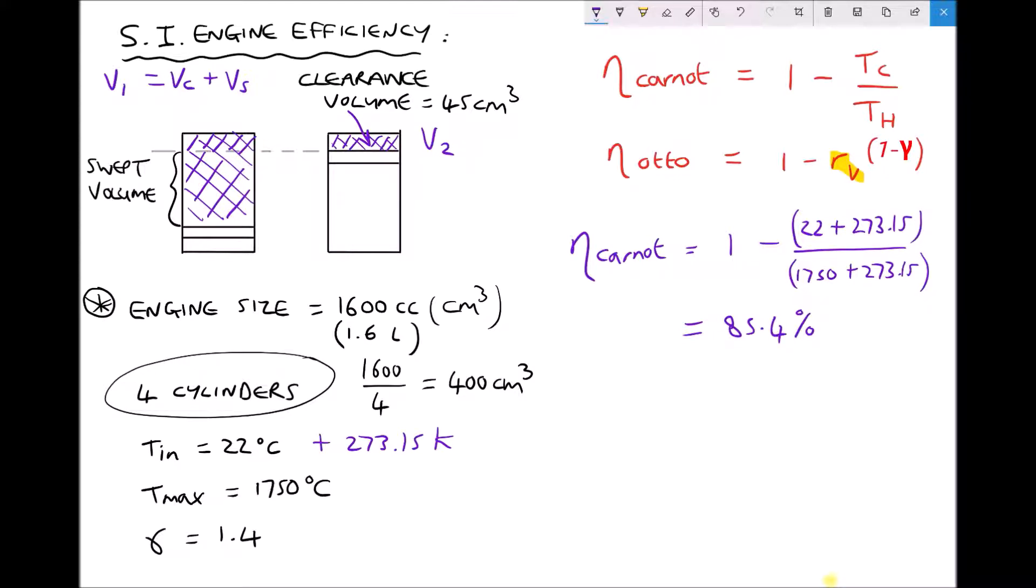Let's see how that compares with our Otto efficiency. First we need to calculate our volumetric compression ratio Rv. We said Rv was V1 over V2, the ratio of the two volumes. We've also said that V1 is Vc plus Vs, and V2 is just Vc, the clearance volume.